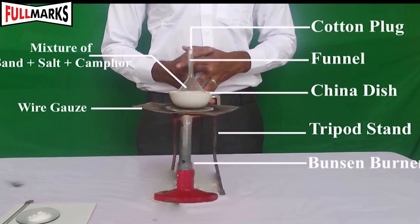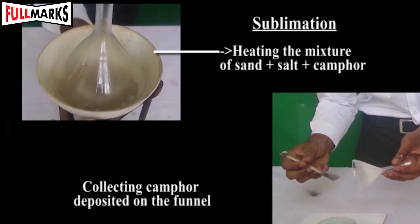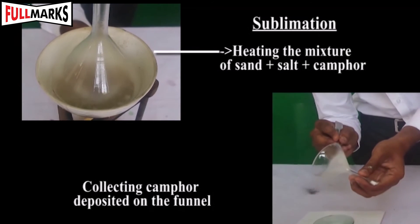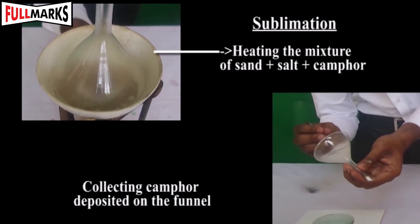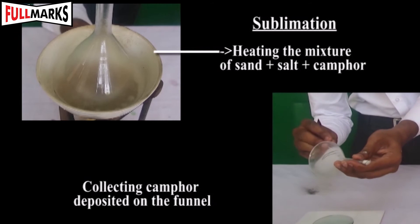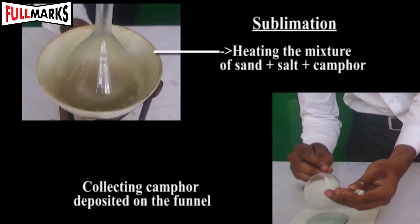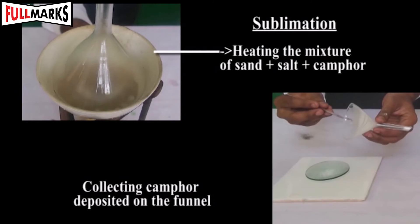Procedure — Sublimation: Separation of camphor from the given mixture. Take a tripod stand and place a wire gauze over it. Keep the china dish with the given mixture on the wire gauze. Place the glass funnel in an inverted position on the mixture and plug the stem hole of the funnel with cotton. Heat the mixture with a Bunsen burner for a few minutes. Remove the funnel to collect the deposited camphor on the funnel. The leftover mixture has only salt and sand.